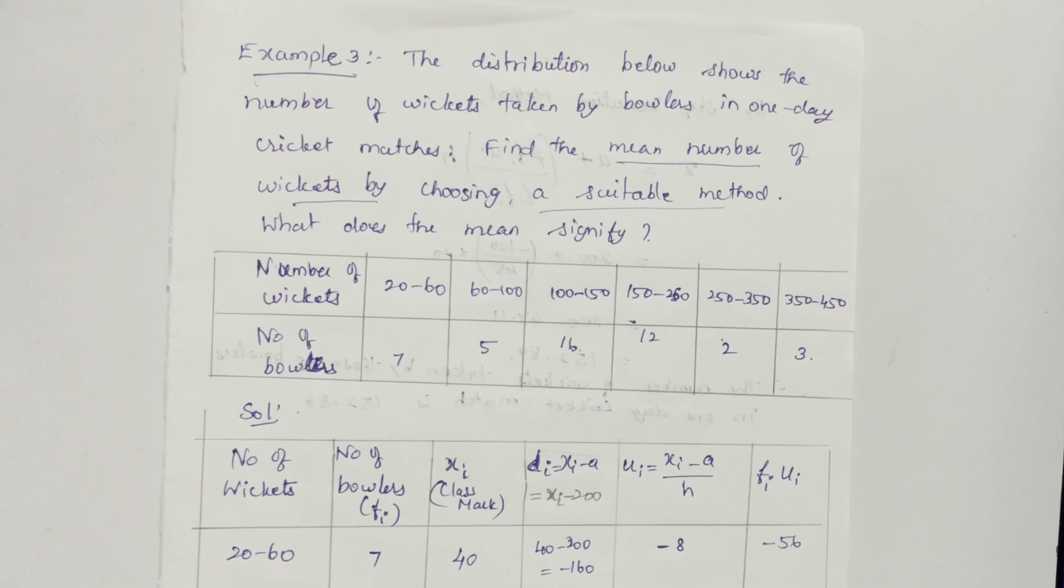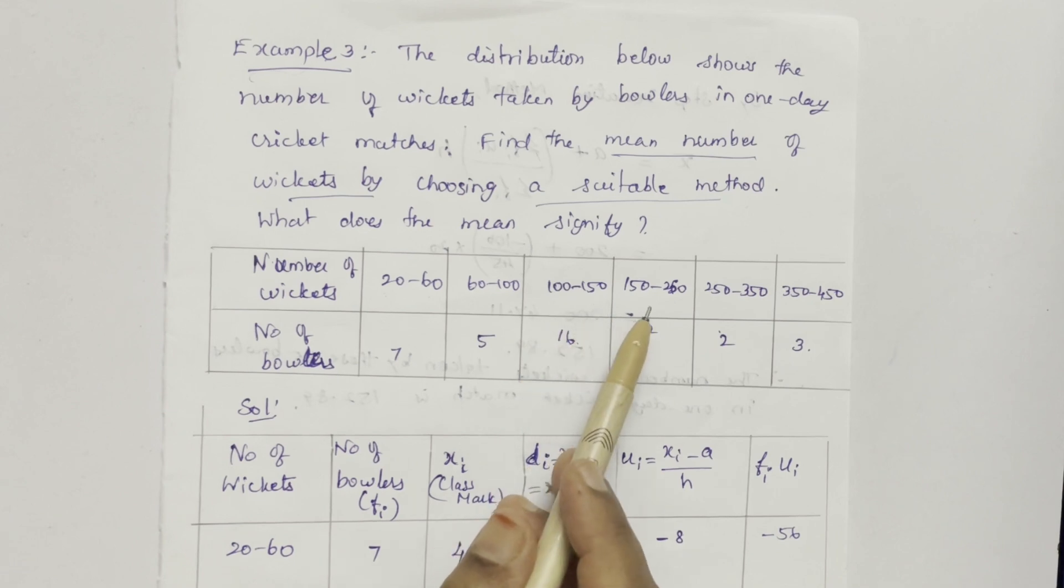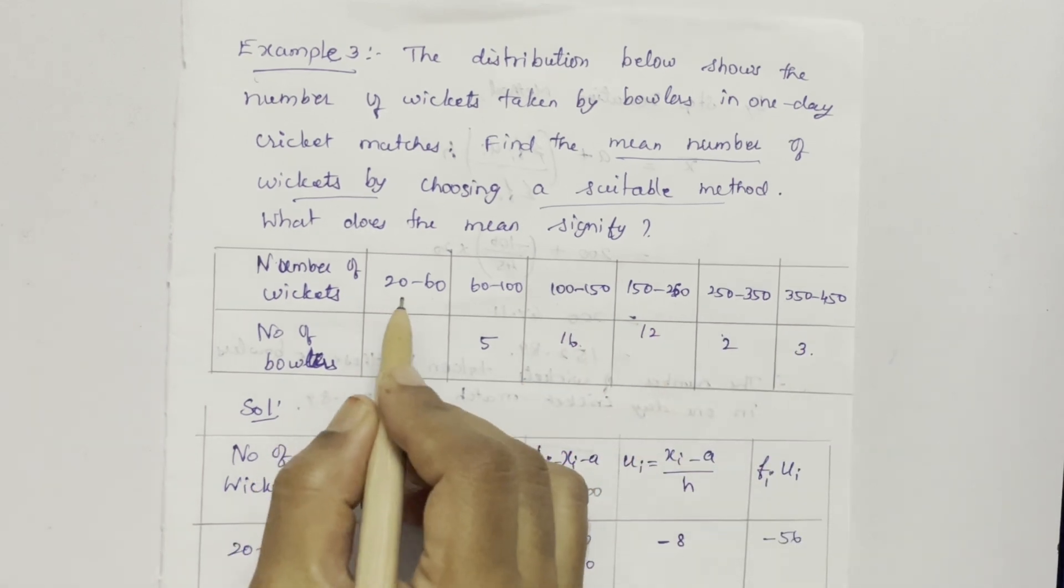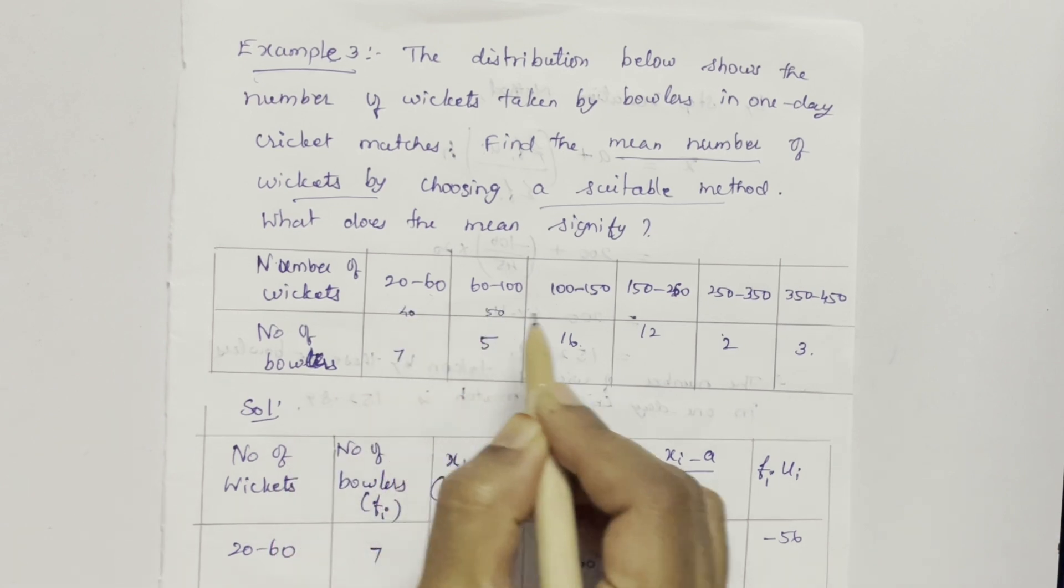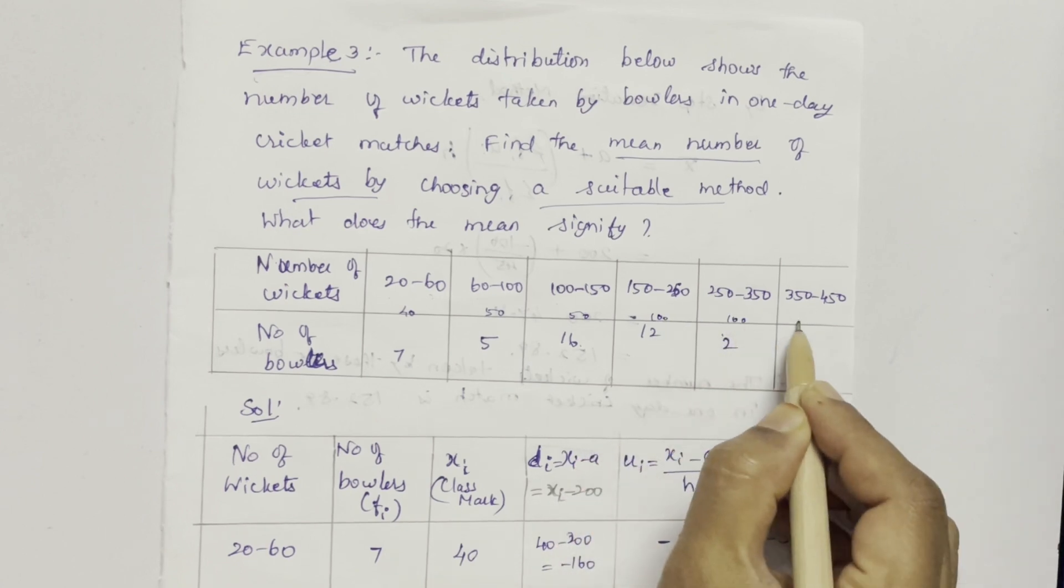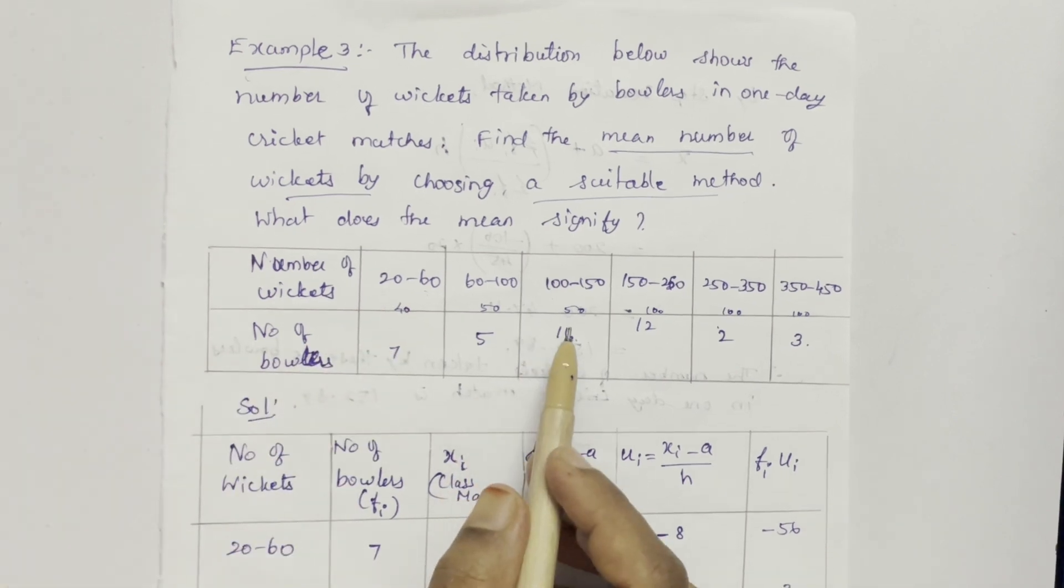It depends on the value of XI. Here interval is given 20 to 60, 60 to 100, 100 to 150. The intervals are different. Here the difference is 40, here 50, here 50, here 100, here 100 and here also 100. So the difference between the intervals are different.